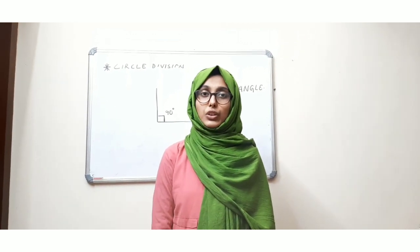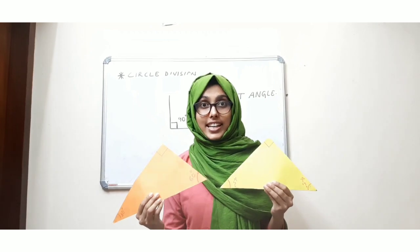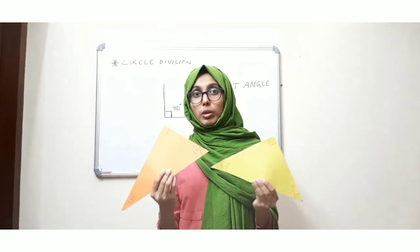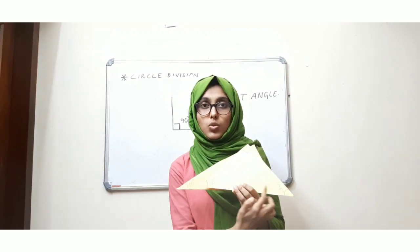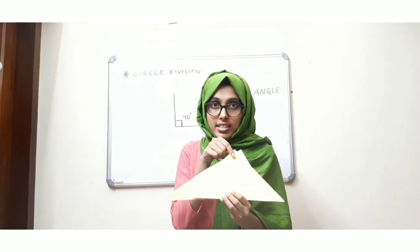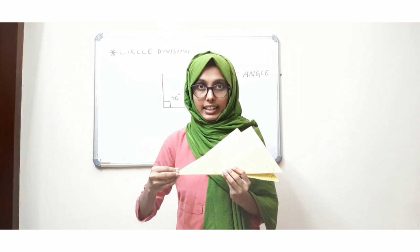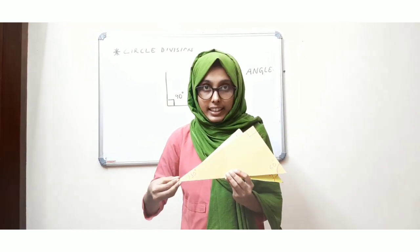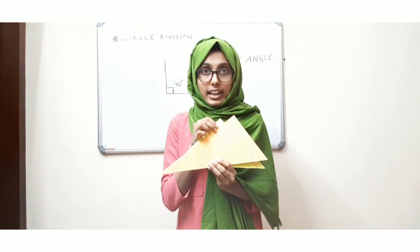Friends, you can see in your box two instruments like this — these are set squares. One set square has two angles of 45 degrees and one angle of 90 degrees. In the other set square, one angle will be 30 degrees, one angle will be 60 degrees, and the other angle will be 90 degrees.